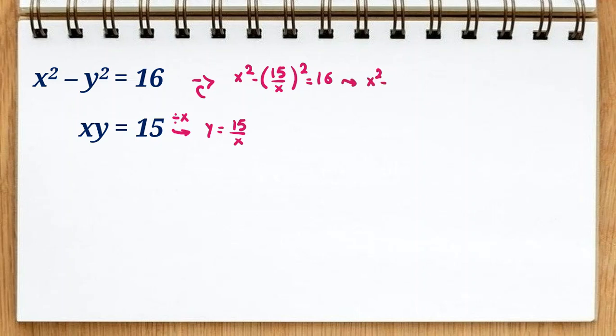So x squared minus 15 squared is 225 over x squared equal to 16. Now we multiply both sides by x squared to get rid of denominators, so it will be x to the 4 minus 225 equal to 16 x squared.